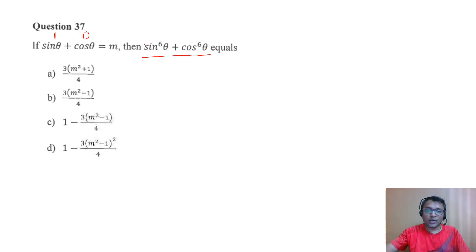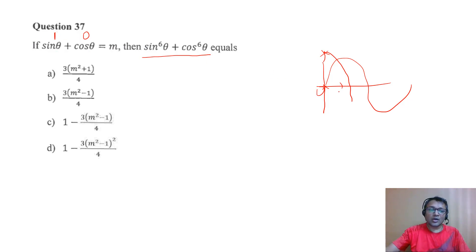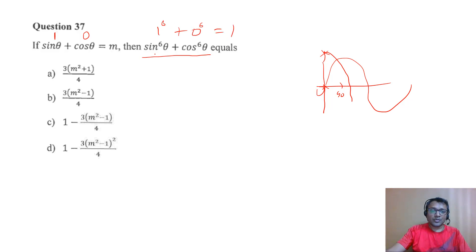Let's say when sinθ = 1, cosθ = 0. If you know the sine and cosine curves — sine starts from zero, cosine starts from one — so cosine of 0° is 1, and at 90°, cosine is 0 and sine is 1. So it becomes 1⁶ + 0⁶ = 1. Now look at which option gives you 1.